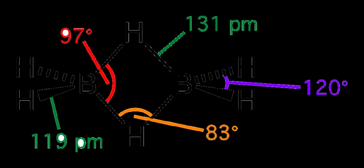The weakness of the BH bridge versus BH terminal bonds is indicated by their vibrational signatures in the infrared spectrum, being approximately 2,100 and 2,500 cm⁻¹, respectively.